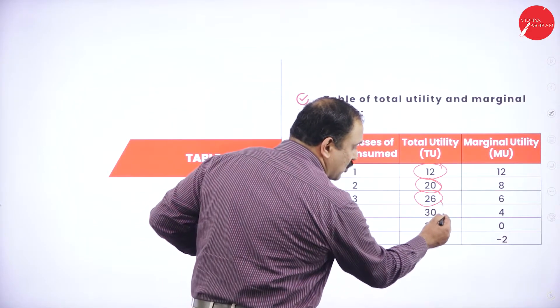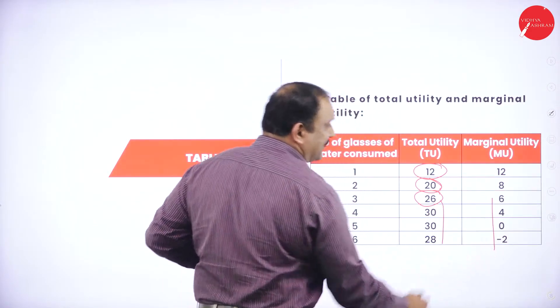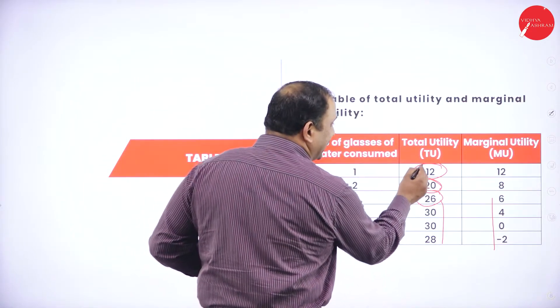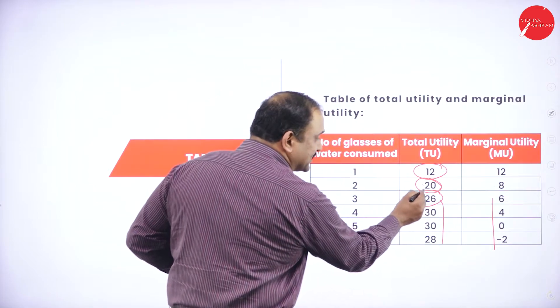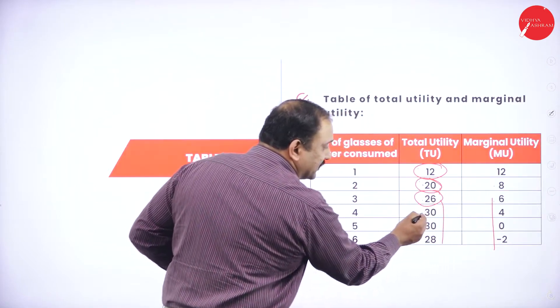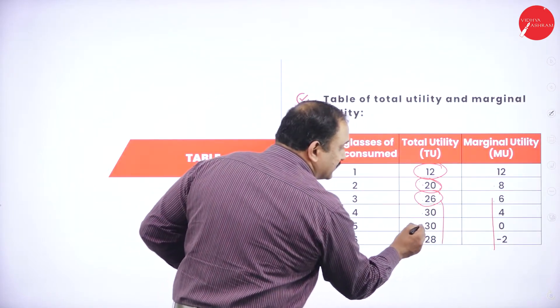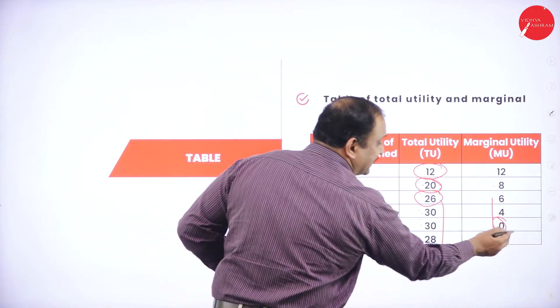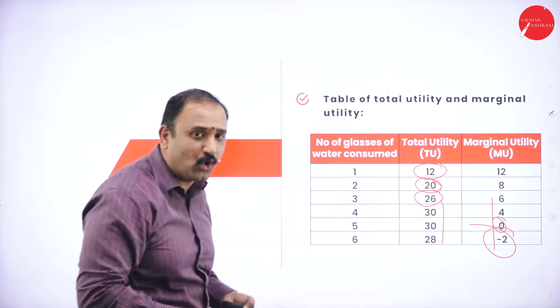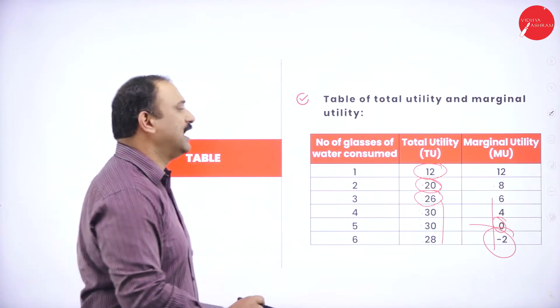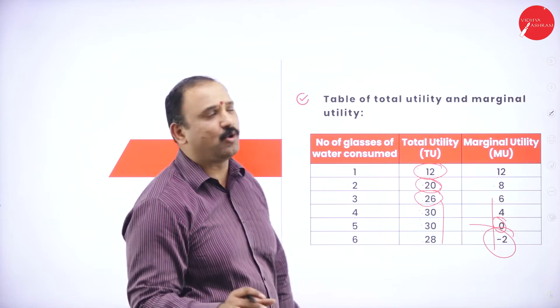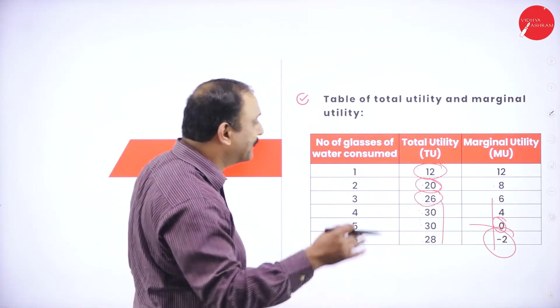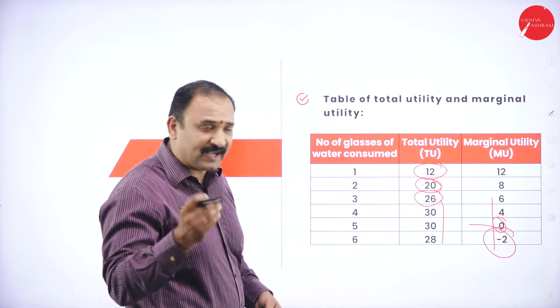How is that possible? You can see here: 20 minus 12 equals 8, 26 minus 20 equals 6, 30 minus 26 equals 4, 30 minus 30 equals 0, 28 minus 30 equals minus 2. From 0, it has gone down to a negative value altogether. That's what we say, the total utility will completely dip towards that particular factor.